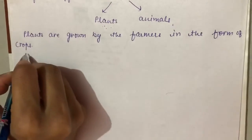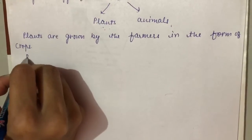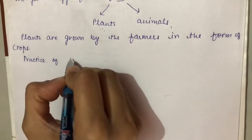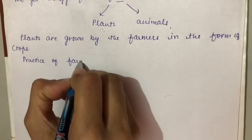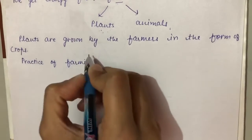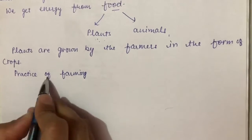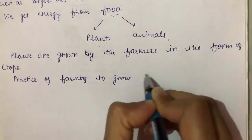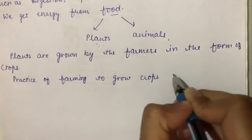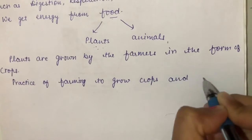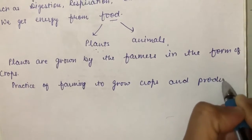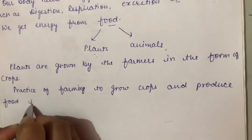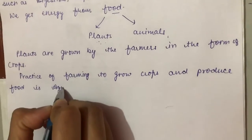Plants are grown by the farmers in the form of crops. This practice of farming to grow crops and produce food is called agriculture.